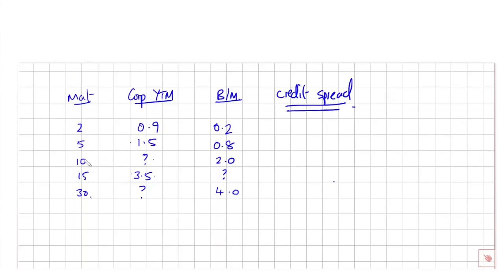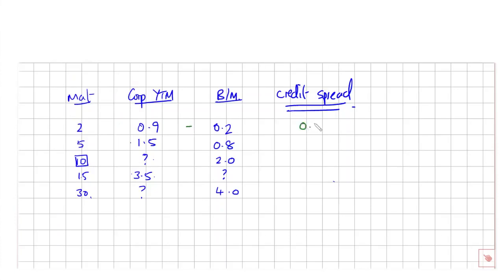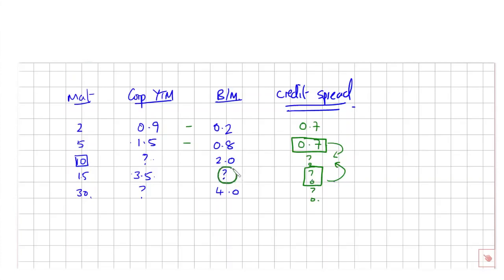We're going to interpolate adjacent maturities for the credit spreads to get the fair credit spread at 10 years. We know the 2-year credit spread is 0.7 and the 5-year is also 0.7 — that's right next to the 10-year we're after. We're missing the 10-year and 15-year credit spread data points. We need to calculate the 15-year credit spread so we can interpolate it with the 5-year spread to get our implied fair 10-year spread. We've been asked to interpolate the existing credit spread curve, not the corporate yield curve.